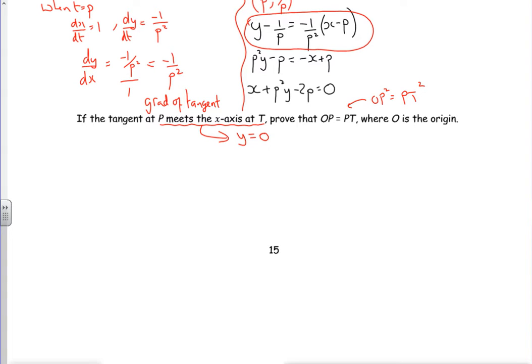So I think we must have said that if it meets at T then that's when y is 0. Right, okay. So I need to know what the x value is that goes with y is 0. So I've got x plus p squared, lots of 0, minus 2p is 0. So x is 2p. So that tells me the coordinates of T which is 2p, 0.